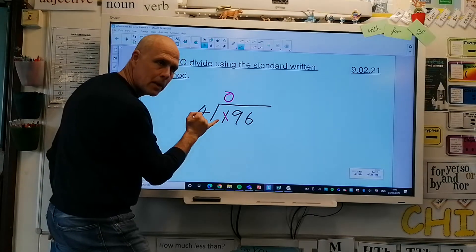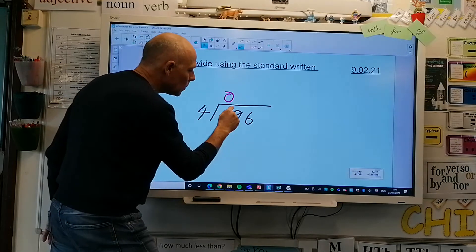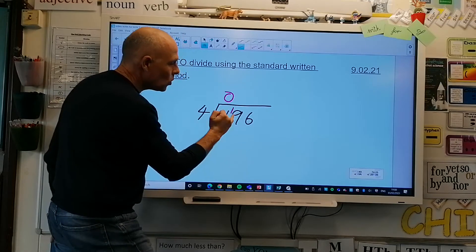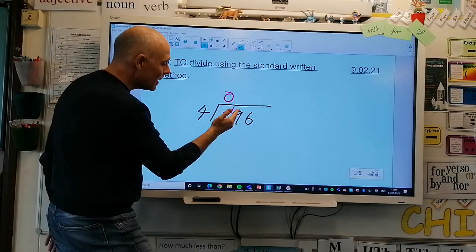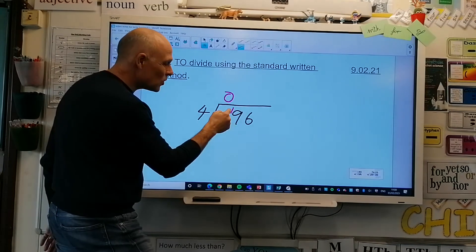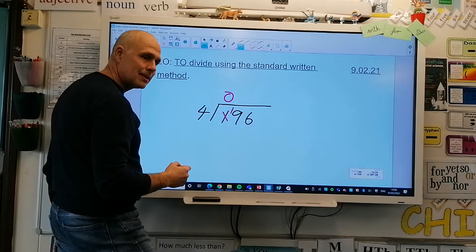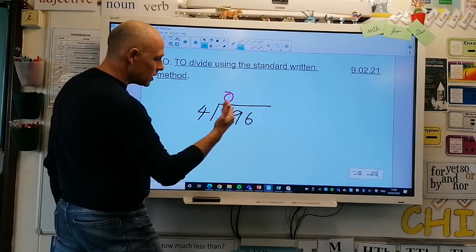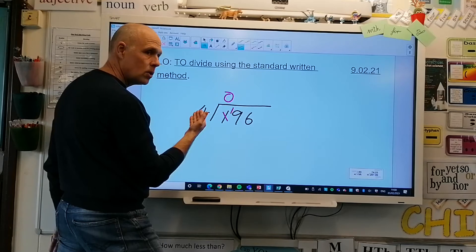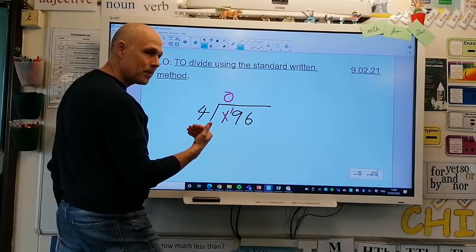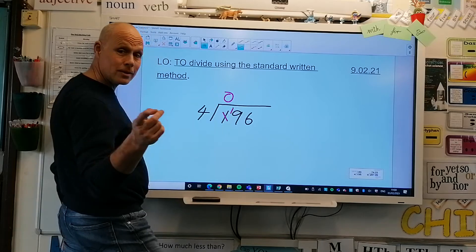Little line through it, I'm going to exchange it. Have a look at this, it's in the hundreds column, so that's 100 and I want to exchange it for how many tens? 10 tens. So now instead of 9 tens I've got 19 tens. Ask yourself that same question: 19 shared equally between 4, how many fours are in 19?